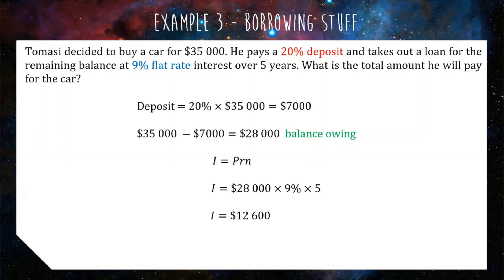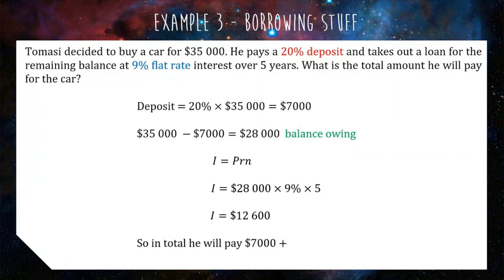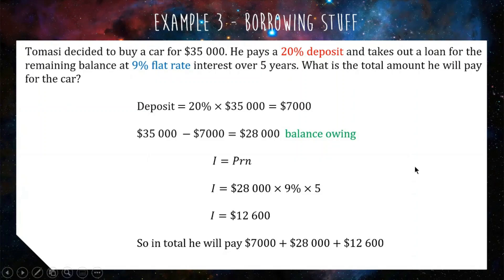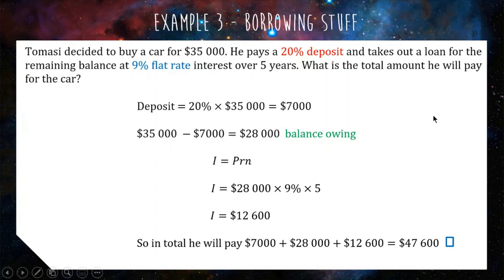To answer the question — what is the total amount he will pay for the car? — we think about what Tomasi has to pay: first, the $7,000 deposit; then the $28,000 loan balance paid off over five years; and on top of that, $12,600 in interest over those five years. So in total, this $35,000 car is really going to cost him $47,600. That's our final answer. It takes a bit of work, but the most important thing is to read the question and understand the terms.